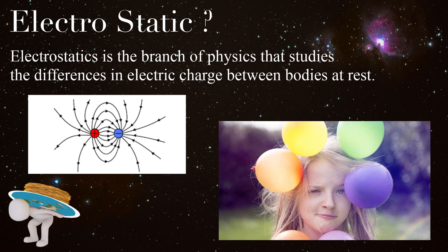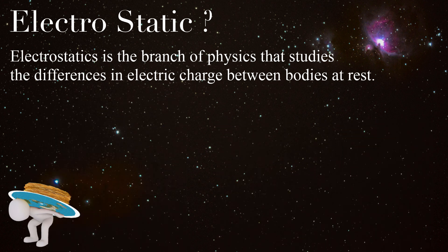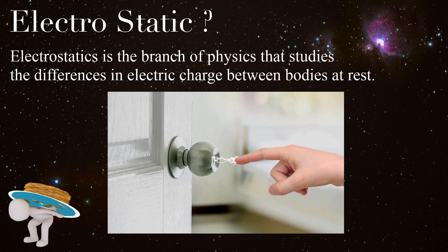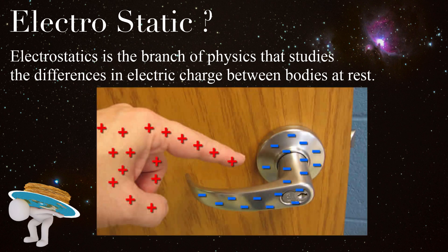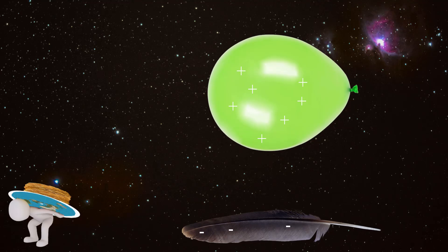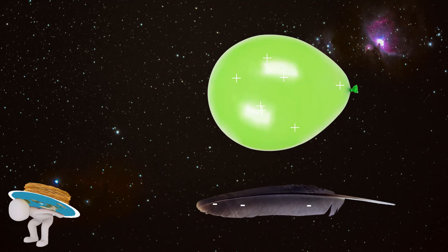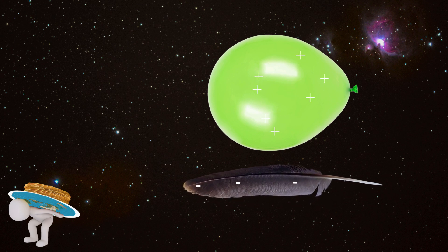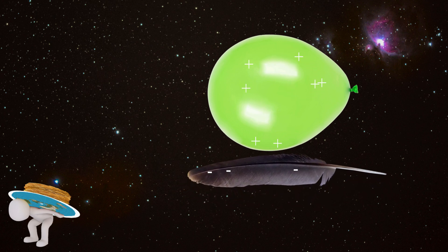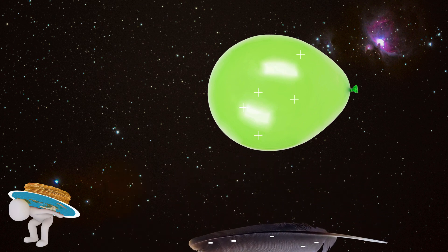This imbalance results in an attractive or repulsive force between objects that all of us have experienced on a dry winter's day. Electrostatics is referred to as such because of the non-fluctuating nature of this charge, as opposed to electric current that continuously flows between the charges. This charge can flow between objects under the right conditions, but after equilibrium is reached, the attractive and repulsive force no longer exists.